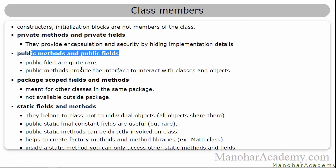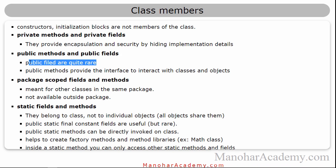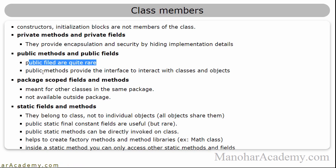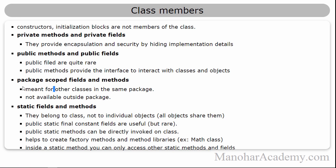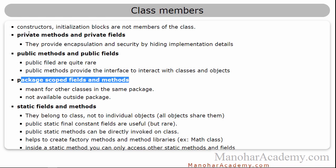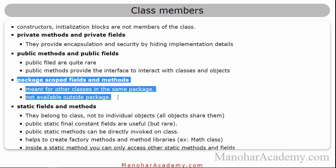Public fields are quite rare — if you are making something public you have to think carefully. Public methods provide the interface and they are very important. Whatever methods you make public, make sure they have proper names because they are the interface to interact with the class and object. Only expose the methods that should be exposed. Package-scoped fields and methods are similar to private ones, but they are available outside the class only inside the same package — sometimes called package-private scope.